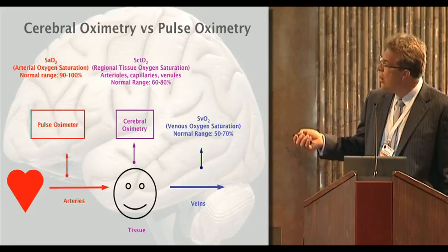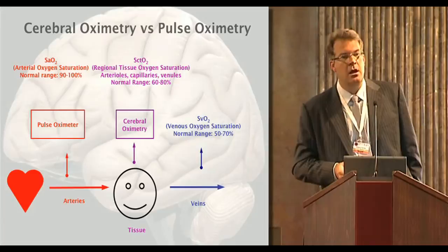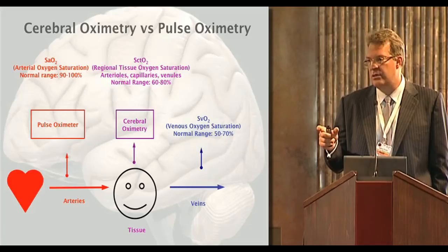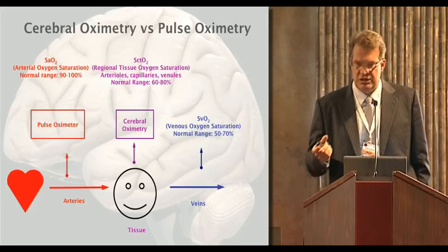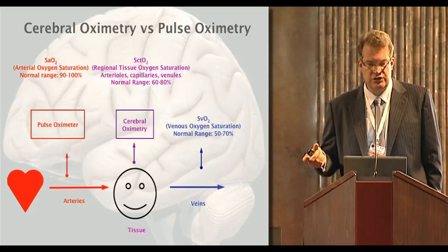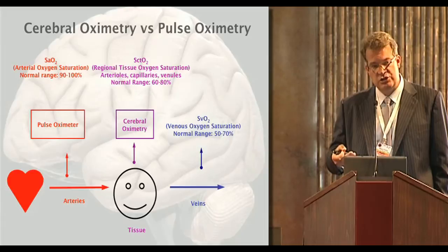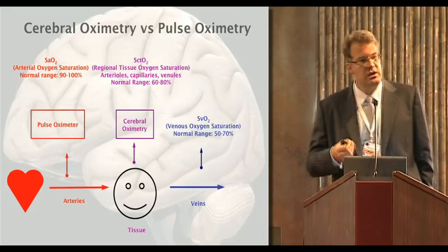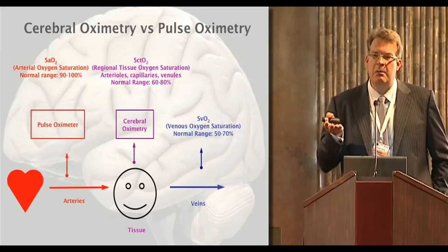Cerebral oximetry is neither arterial nor venous — it's something in between. Through PET studies we were able to look at the blood volume distribution in the brain, and we know that it's about 30% arterial and about 70% venous in most healthy human beings, even during situations of stress. The algorithms developed to calculate cerebral tissue saturations employ this ratio — 30% arterial, 70% venous — so what it really represents is a capillary, or almost a metabolic, value.